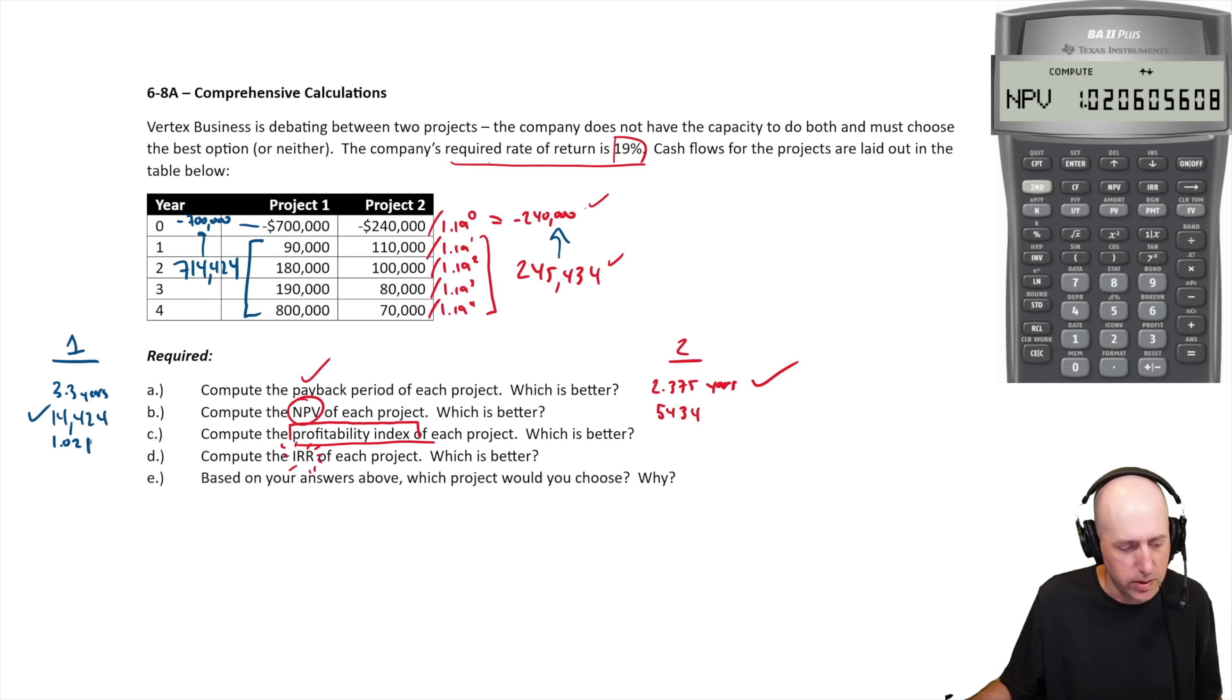So that's for part C. And 245,434 divided by 240, 1.023. So what would you prefer? Well, it's close, but definitely project two is slightly better than project one as far as profitability index goes.